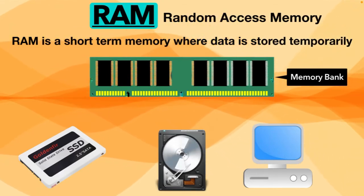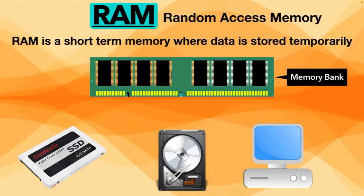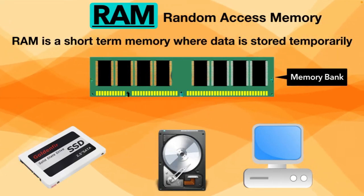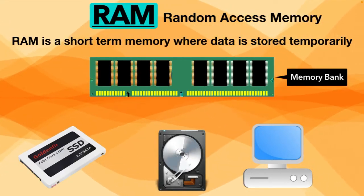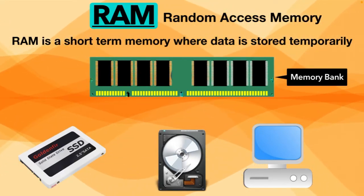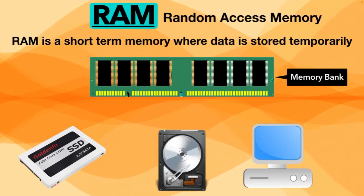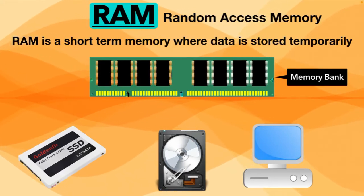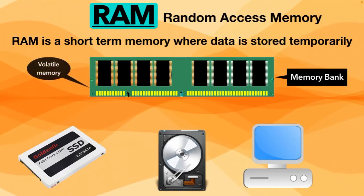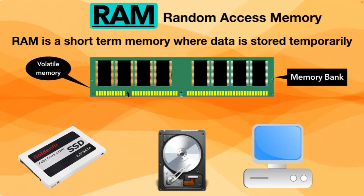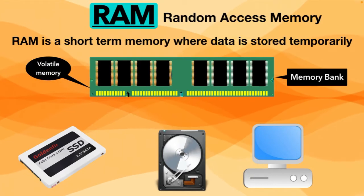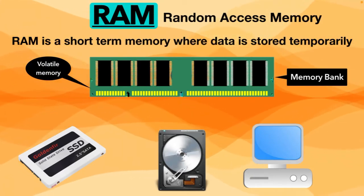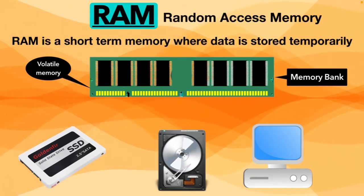That's why RAM is much faster than other kinds of storage devices such as hard drives, SSDs, or optical drives. Remember, RAM is volatile memory — that means data is retained in RAM as long as the computer is turned on.